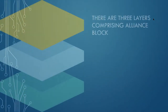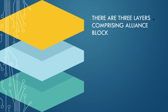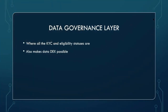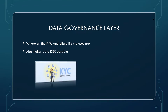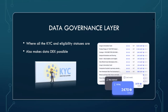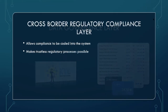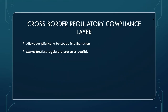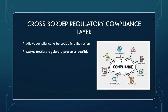AllianceBlock is comprised of three layers. The first layer is the data governance layer. That's where all the KYC and eligibility statuses are. It's also thanks to this layer that the data DEX is possible.